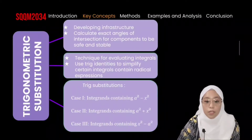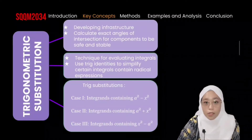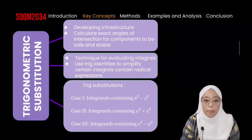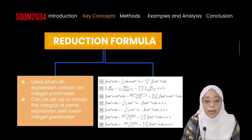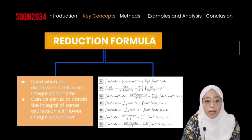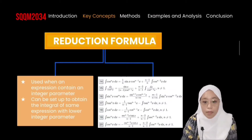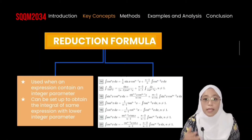We have three cases of trigonometric substitution. The first case involves a² − x². The second case involves a² + x². And the third case involves x² − a². Last but not least, we have the reduction formula, which is used when an expression contains an integer parameter. It can be set up to obtain the integral of the same expression with a lower integer parameter. We have many reduction formulas available.